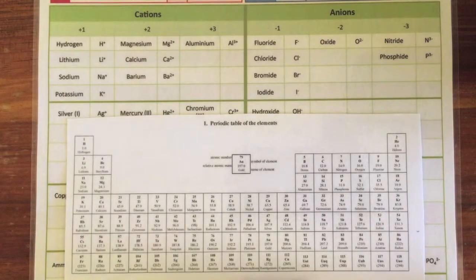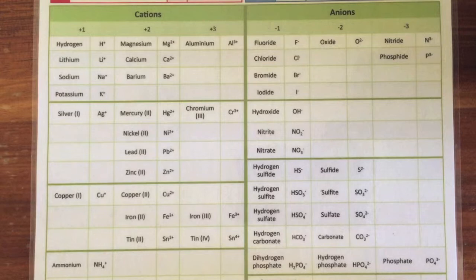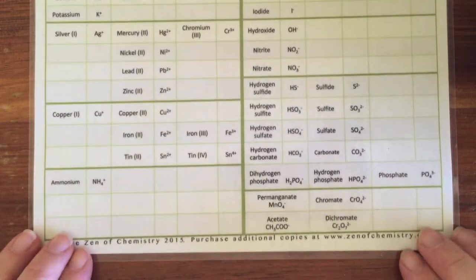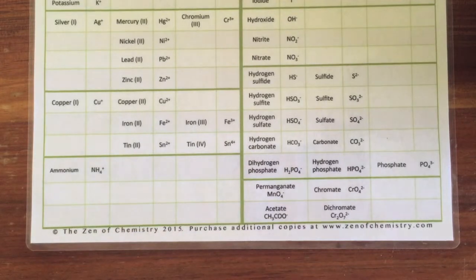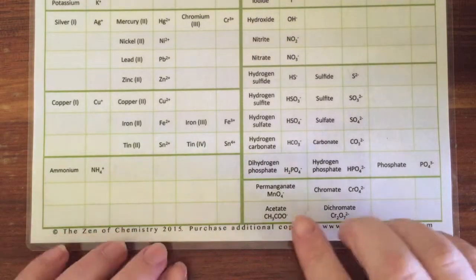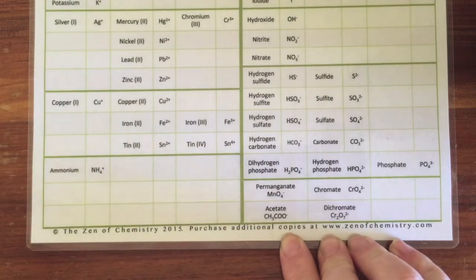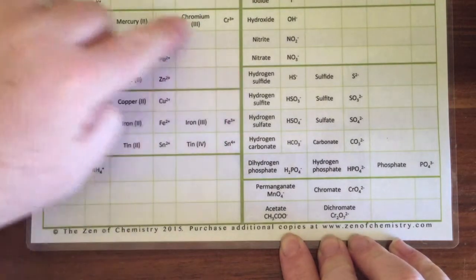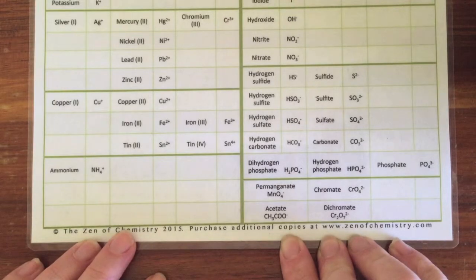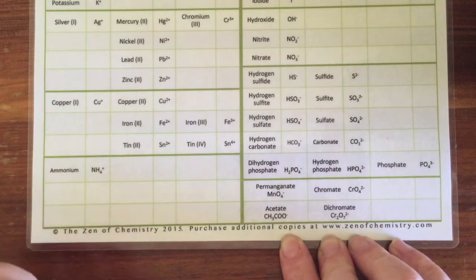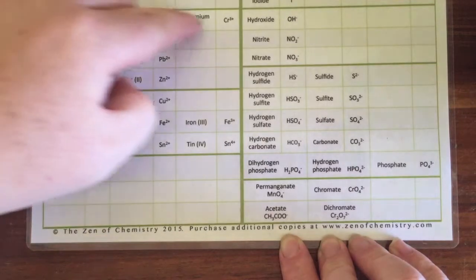If we move down we start to get a little trickier. If we look on the cation side, all of these two boxes are transition metals, and the ones in this box here